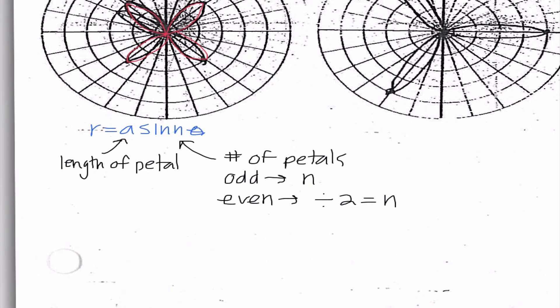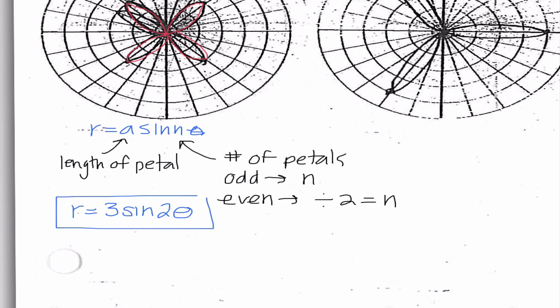In this case, looking at our graph, it looks like we're going out one, two, three — so a equals 3. It looks like there are one, two, three, four petals. Four divided by two is two, so our equation would be r equals 3 sine 2θ. Honestly, roses don't get harder than this. Once we get the form down, we're in good shape.